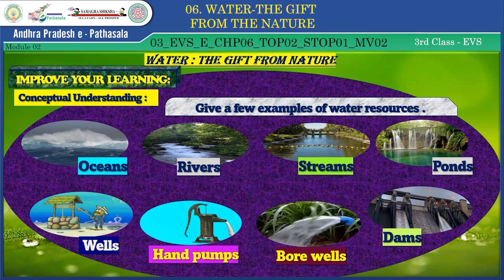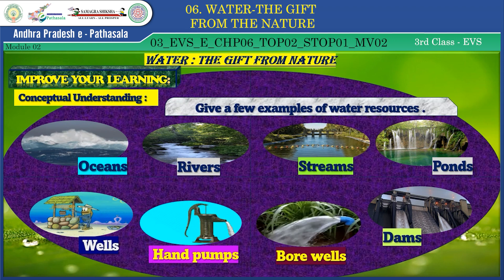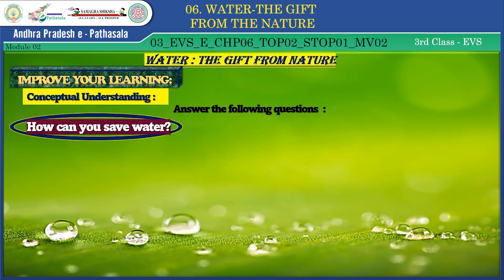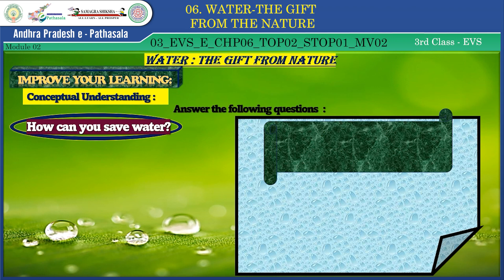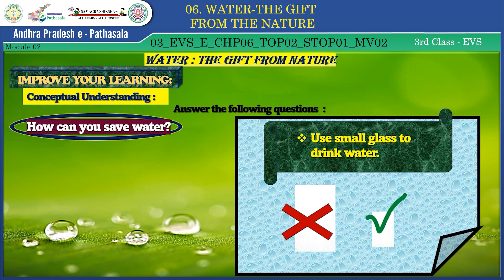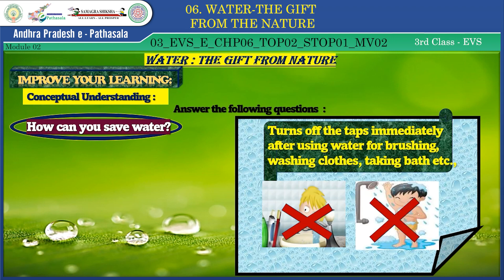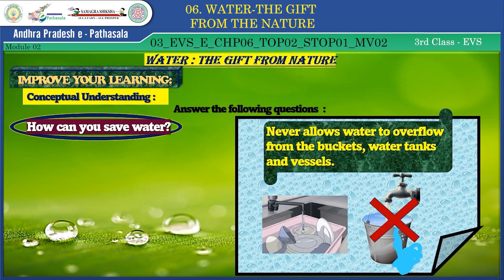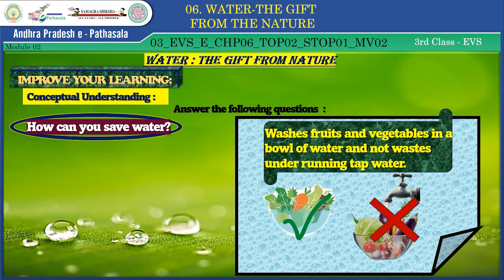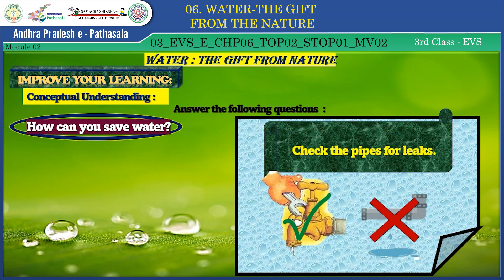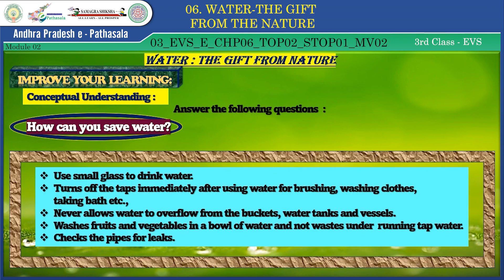My dear little shining stars, share your opinions on how to save water in your own words. How can you save water? Use a small glass to drink water. Turn off taps immediately after using water for brushing, washing clothes and bathing. Never allow water to overflow from buckets, water tanks and vessels. Wash fruits and vegetables in a bowl of water, not under a running tap. Check pipes for leaks. Promise me — from today onwards, we will follow these steps.